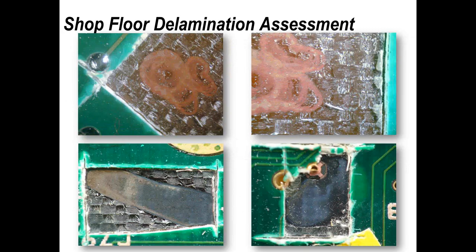If you have a problem with delamination, literally take the board, take a pen knife, and cut a small section out where you've got the bubble or blister. On the top two photographs you can see poor bonding or poor adhesion to the copper, which is particularly obvious. On the other boards I show poor adhesion to an oxide treatment. An oxide treatment is often used inside the layers of the board to improve adhesion — that's the black area you see. The epoxy hasn't bonded to that in all areas, hence delamination can occur.